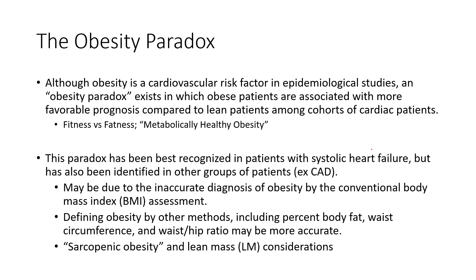If we define obesity by other standards, including percentage body fat — which is not always readily available in the clinic — or waist circumference, we think that can give a more realistic, accurate depiction of where someone is carrying their weight. We also think there are conditions of sarcopenic obesity, where lean mass may matter almost more than just absolute weight. There's a lot more than just accumulation of fat; adipose tissue has other impacts as well.